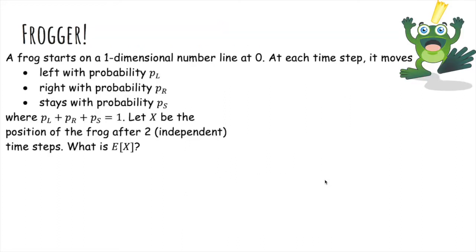So now let's apply linearity. A frog starts on a 1D number line at 0. At each time step, it moves left with probability PL, right with probability PR, and stays with probability PS, where they add up to 1. Let x be the position of the frog after two time steps. What is the expected value of x?